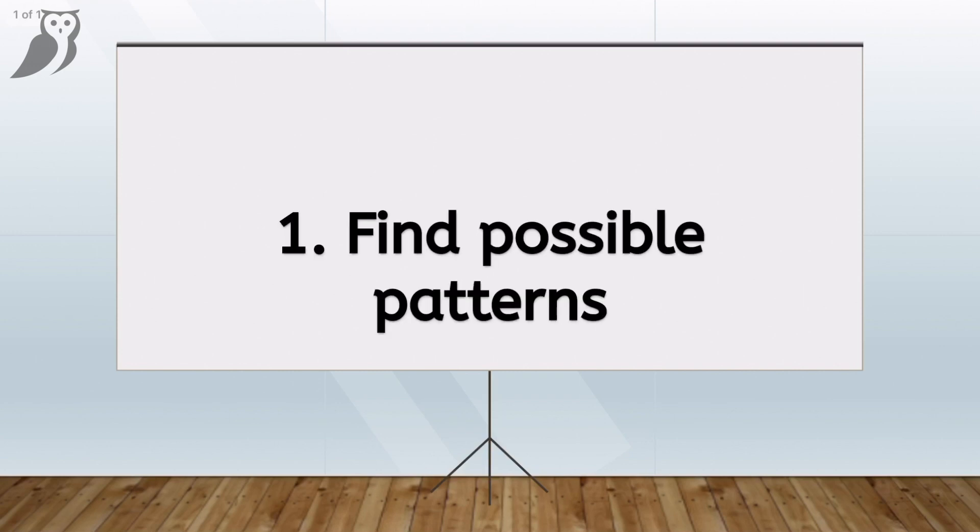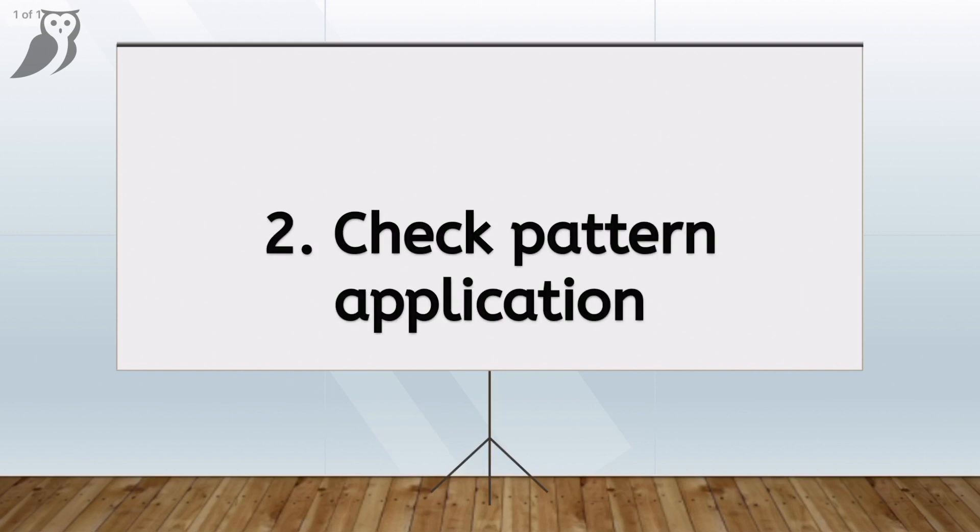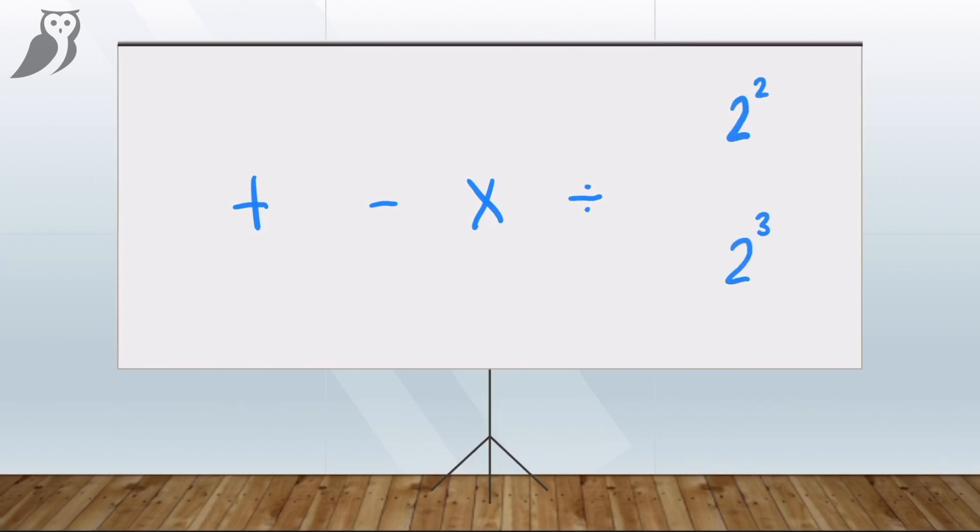So let's recap. Our steps are first to figure out patterns from number one to number two, and second to check if any of the patterns apply to all numbers present. To identify the pattern, you can use the four pillars of mathematics to help you break it down. These are addition, subtraction, multiplication or division. If the sequences do not follow any of these patterns, you could also consider using square or cube numbers or a combination of all of them.